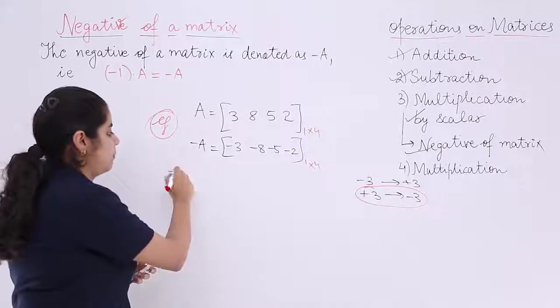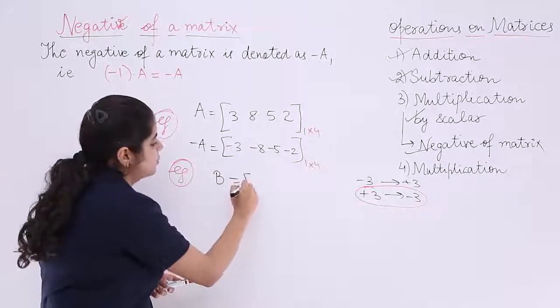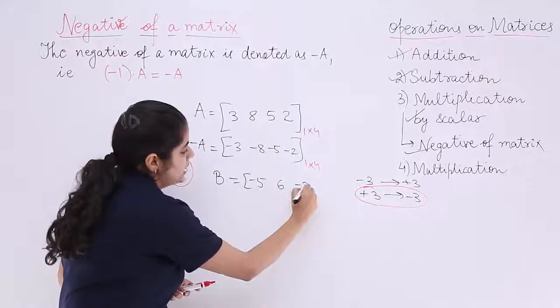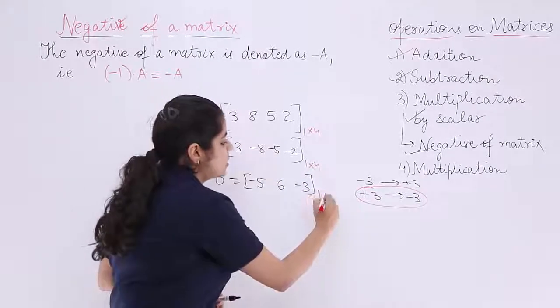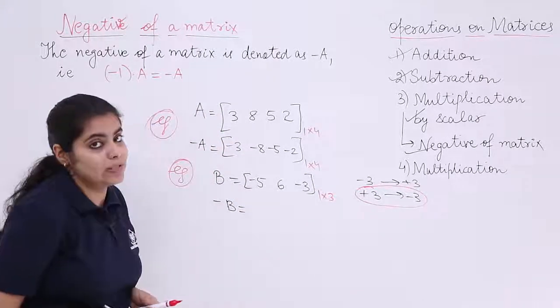But what about the next example? Let's check our knowledge. I have a matrix B which is minus 5, 6, minus 3. Now this is a matrix which is a row matrix, 1 row 3 columns. I am supposed to find out now minus B in the question.